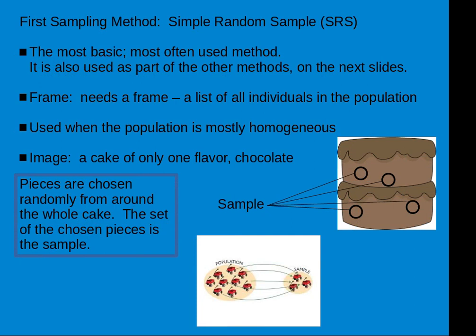The first sampling method is Simple Random Sample, or SRS. SRS is the most basic and most often used, and it's also part of all the other methods. Simple Random Sample needs a frame — a list of all individuals in the population. We use this method when the population is mostly homogenous. The cake image for this method is a cake of only one flavor, for example chocolate. Pieces are chosen randomly from around the whole cake, and the set of chosen pieces is the sample.